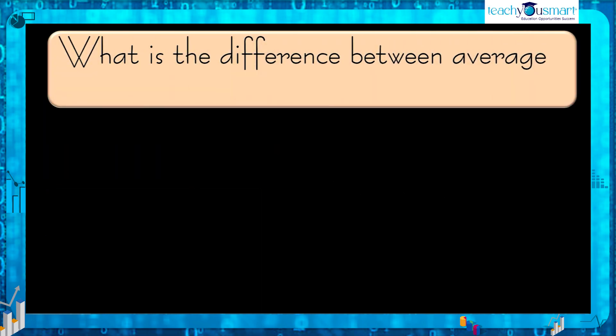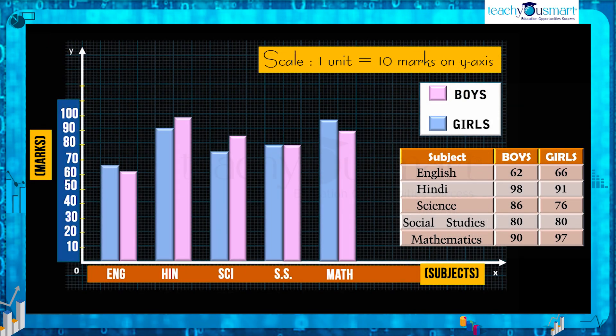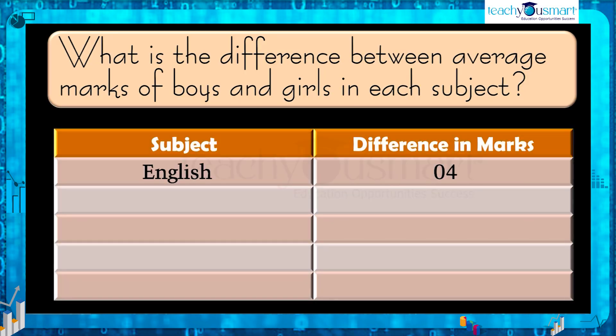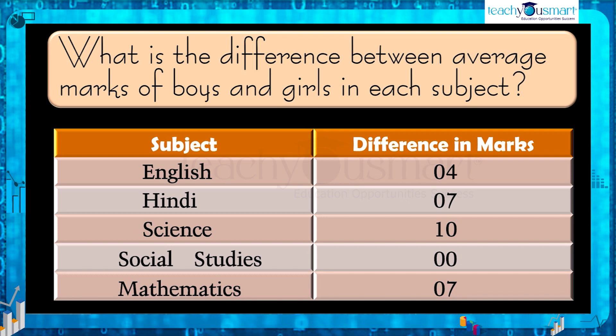What is the difference between the average marks of boys and girls in each subject? English 4 marks, Hindi 7 marks, science 10 marks, social studies 0 mark, and mathematics 7 marks.